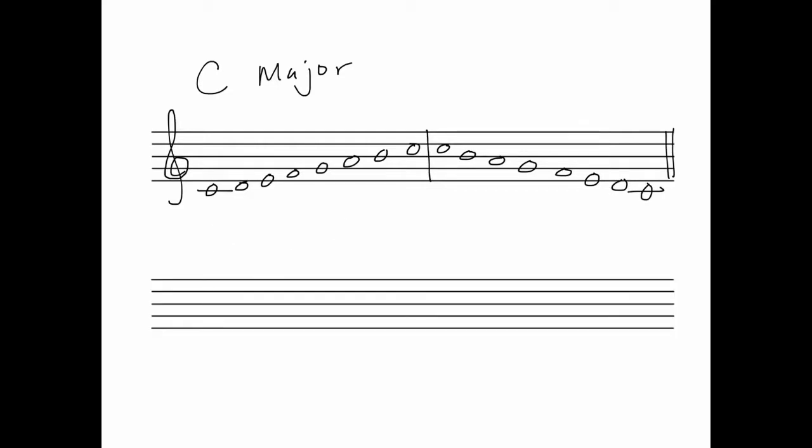Next we'll write out A natural minor. To write the A natural minor, we don't need to make any changes to the key signature. All we do is start on A instead of C.